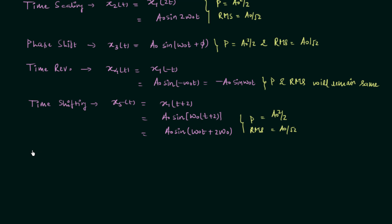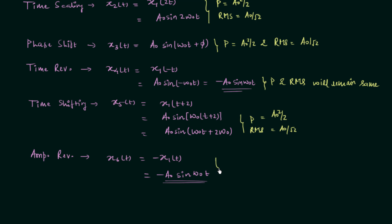The next operation is amplitude reversal. Signal x6t = −x1t = −a0·sin(ω0t). Comparing x6t with x4t, they are the same, so the average power and RMS value remain a0²/2 and a0/√2 respectively — amplitude reversal has no effect. However, in amplitude scaling the average power will change, unlike in amplitude reversal.